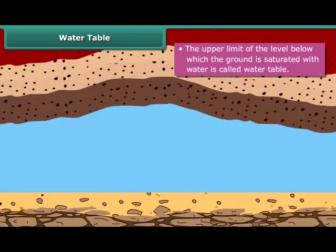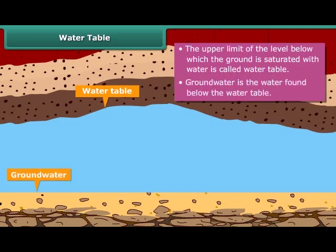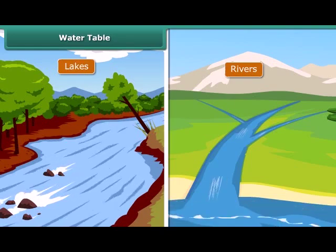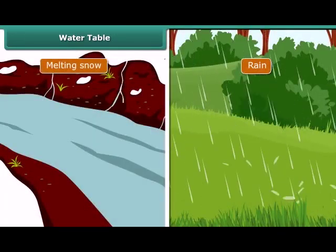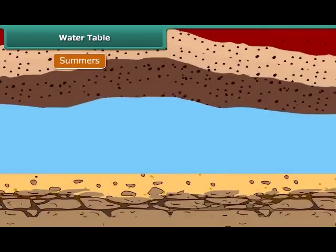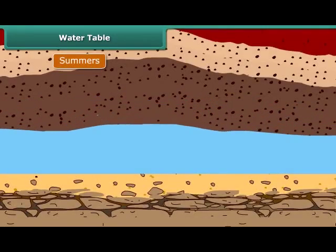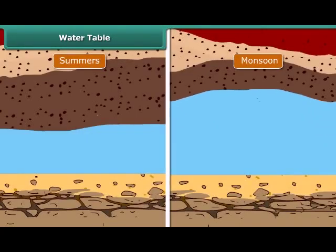The upper limit of the level below which the ground is saturated with water is called water table. Ground water is the water found below the water table. Runoffs from lakes and rivers, melting snow and rain lead to the formation of water table. Seasonal fluctuations in water table are common. During summers, the water table goes down, but during monsoon, its level rises.